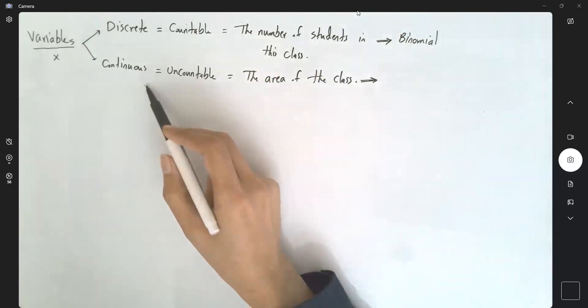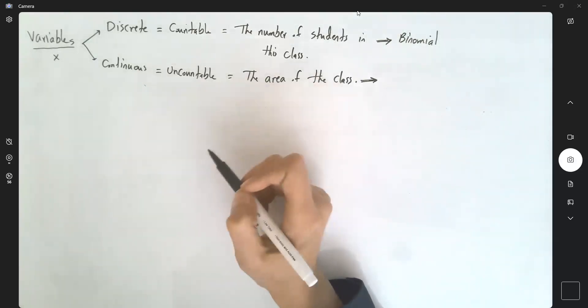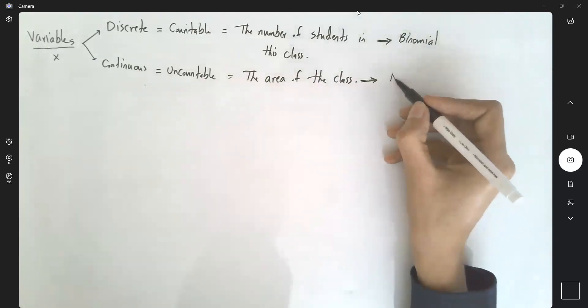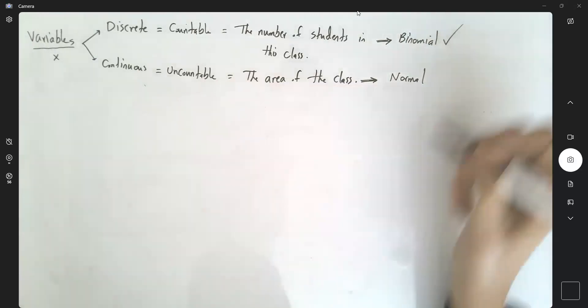one famous probability is related to binomial experiment and binomial probability. Later on, we're going to talk about continuous random variables and continuous probability, which is normal. So for now, our focus is on binomial experiment and binomial probability.